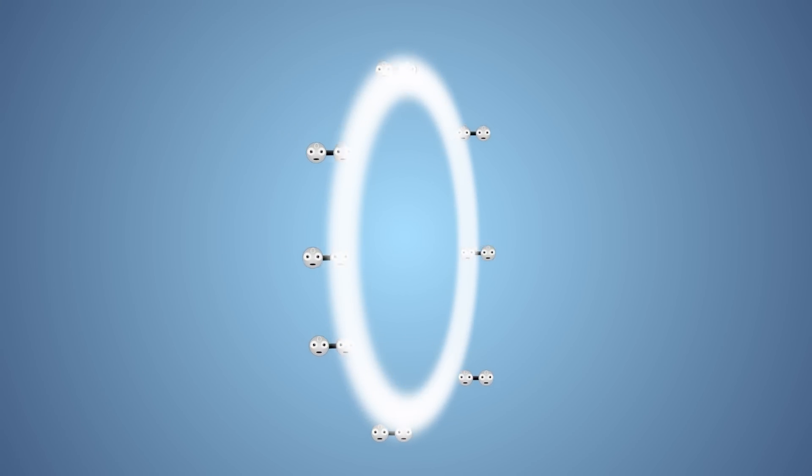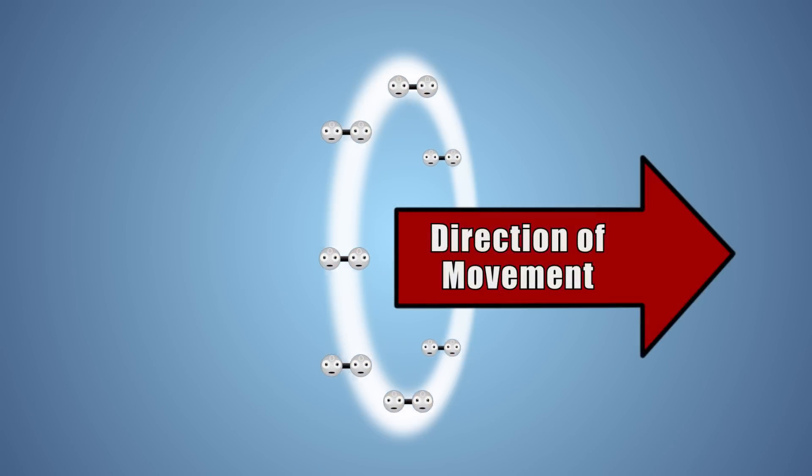A toroidal vortex has a special property. As it travels forward, its air molecules rotate around the ring in a circular pattern. The direction that the air molecules rotate is determined by the direction of the vortex's movement.